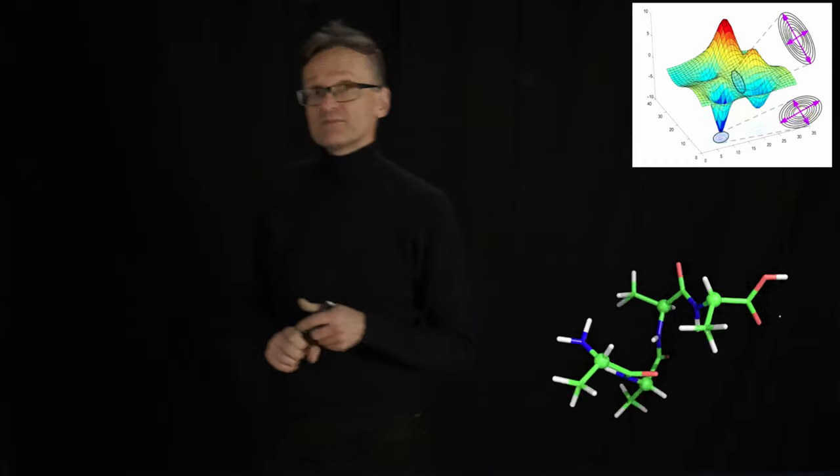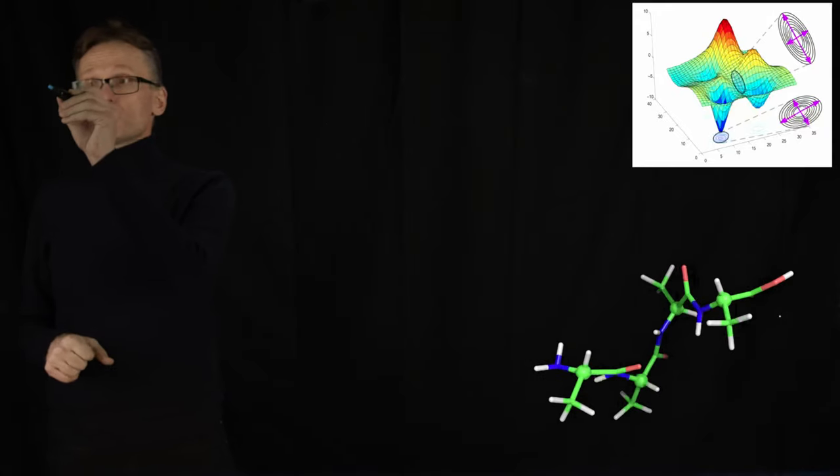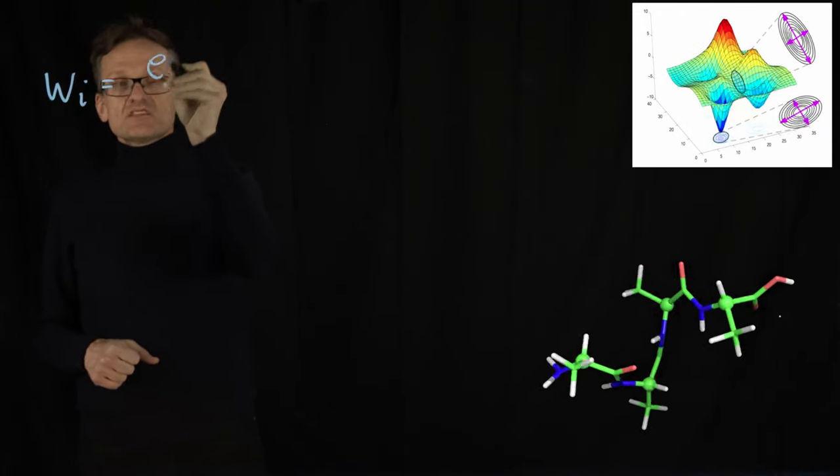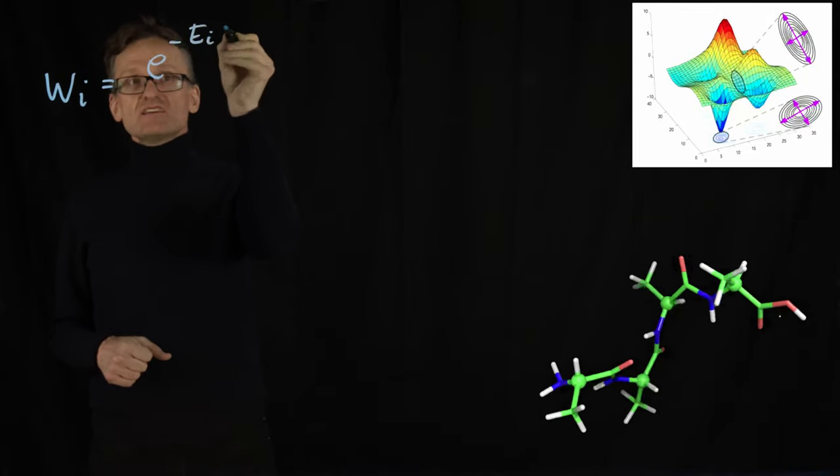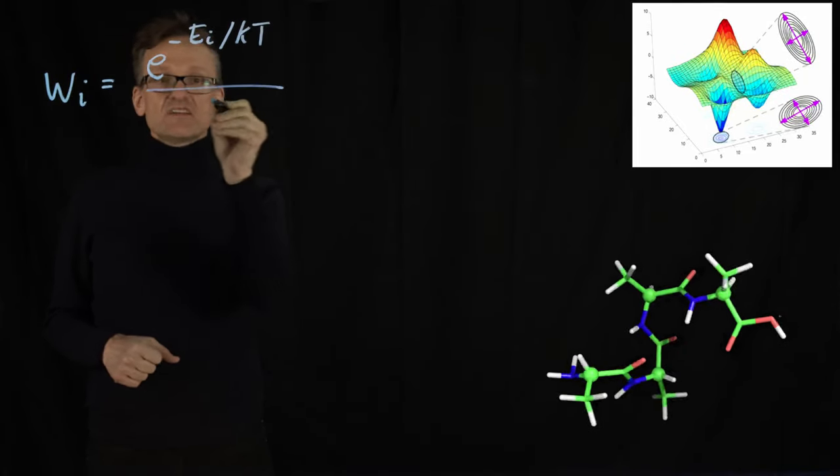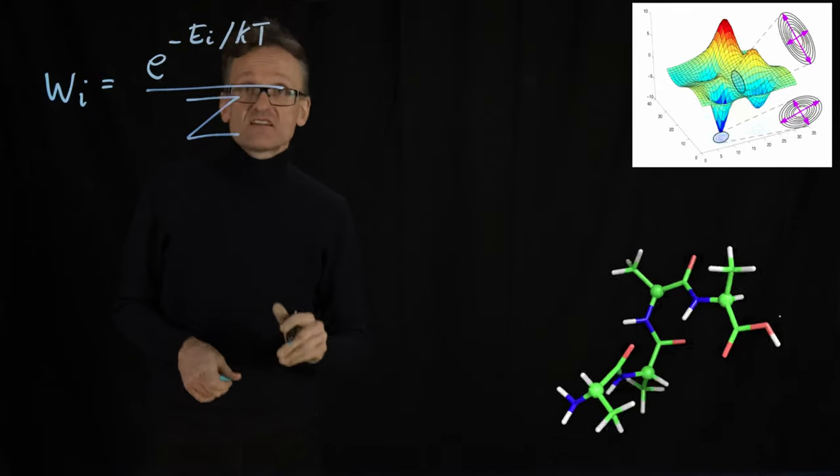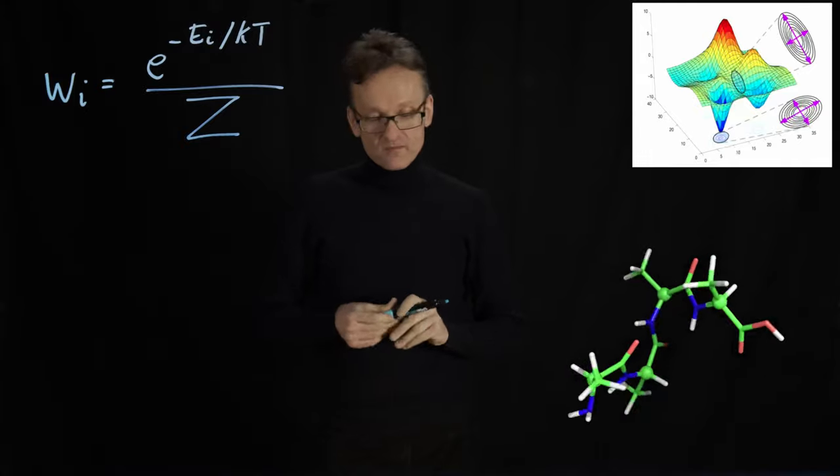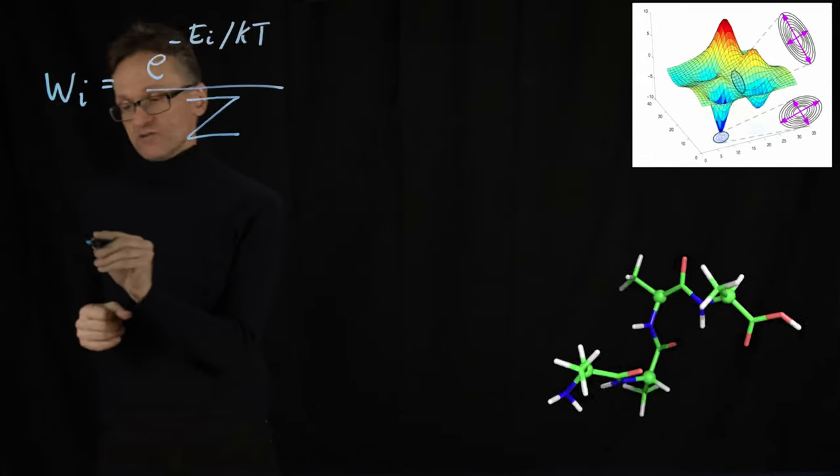You remember those parts: the weight, the probability of finding the system in state i, that was e raised to minus the energy of that state divided by the partition function capital Z. That was the sum over all such energies.